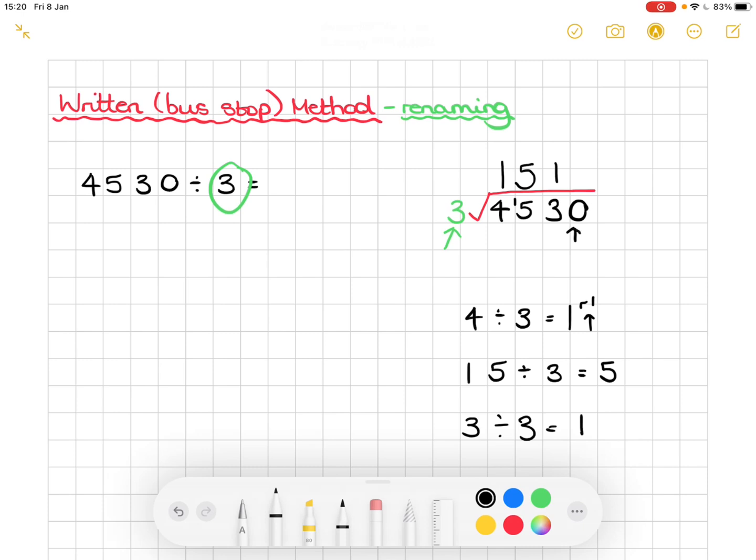And finally, our ones column has nothing in it. And where there's nothing to divide, we just pop the 0 there. So we now know that 4530 divided by 3 makes 1510.